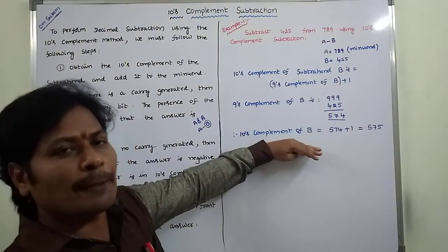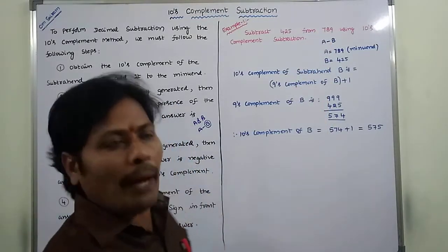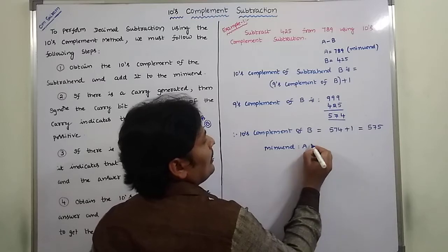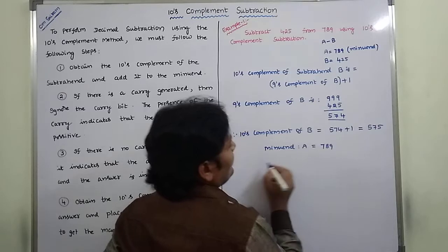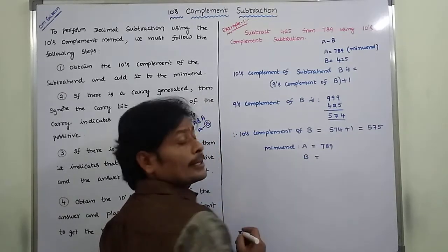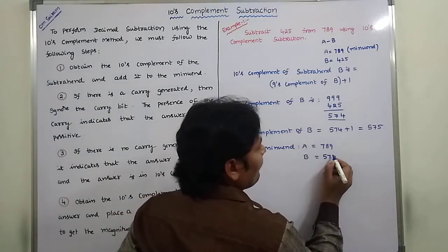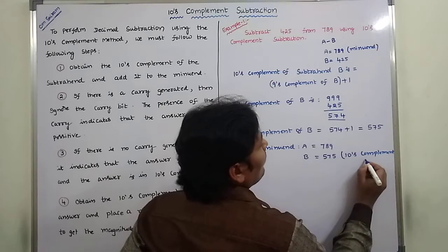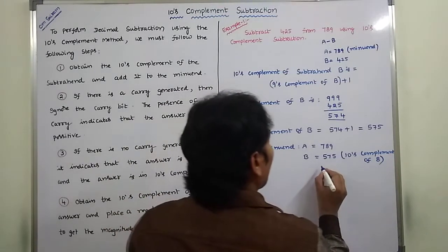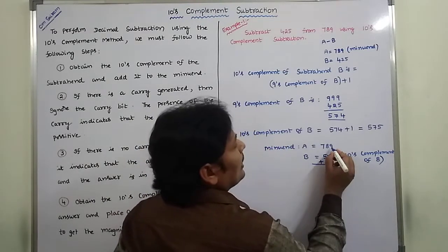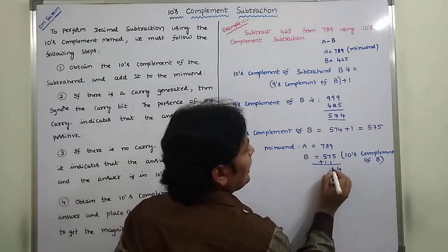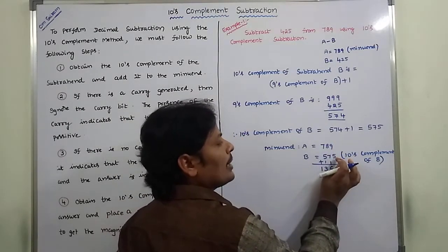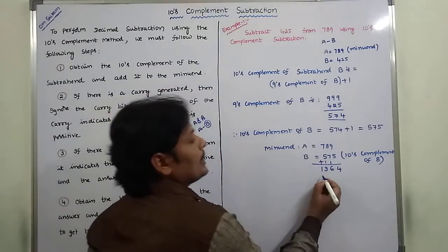After getting the tense complement of the subtrahend B, it is added to the minuend. Minuend A is equal to 789, and we add the tense complement of B which is 575. Performing the addition: 9 plus 5 is 14; 8 plus 7 plus 1 carry is 16; 7 plus 5 plus 1 carry is 13. We are taking three bits but we are getting four bits, so this extra bit is a carry bit.